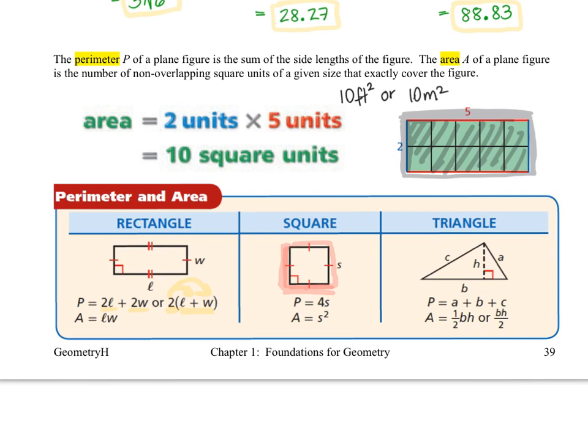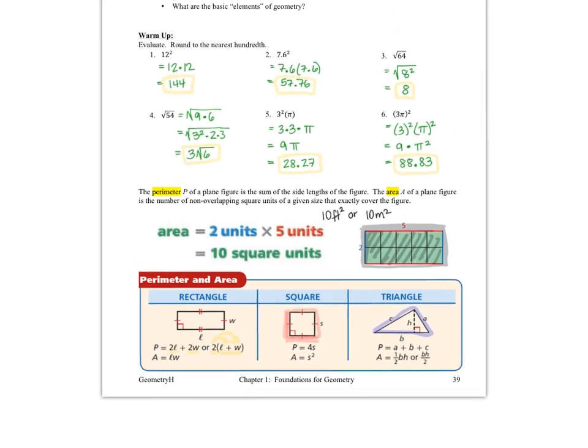Triangle, for the perimeter, we're going to add the lengths of the three sides together, so A plus B plus C in this case. For finding the area, it's one half base times height. Another way we can look at that is base times height divided by two.